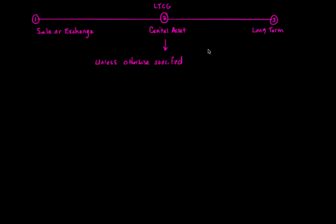The first type of asset that the code carves out as not a capital asset is inventory. You really do need to learn these — write these down, do note cards. Inventory is never a capital asset. I always tell my students whenever they learn which assets are not considered capital assets to learn this using note cards. Write these down, memorize these. Inventory is the first item that is not a capital asset.